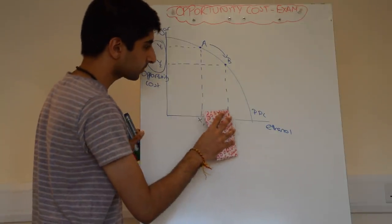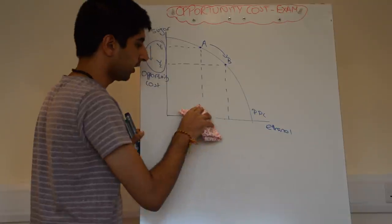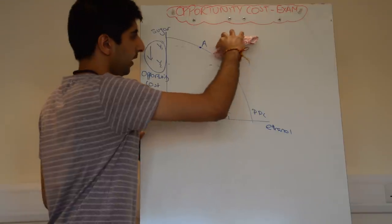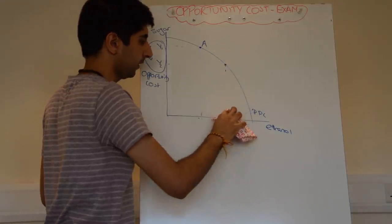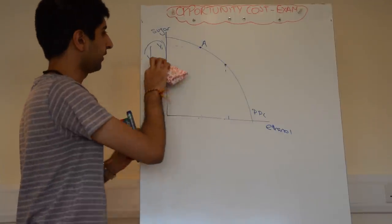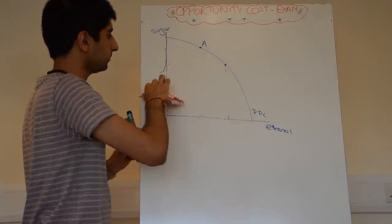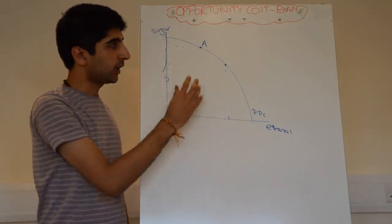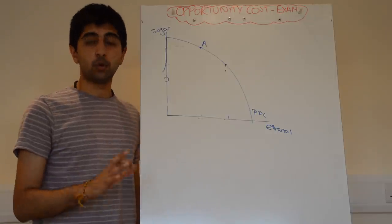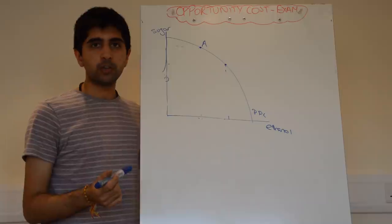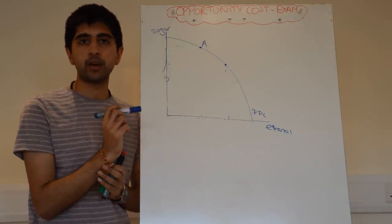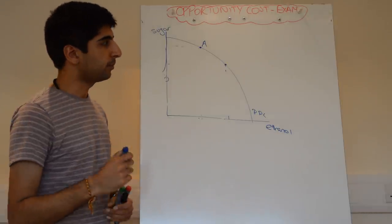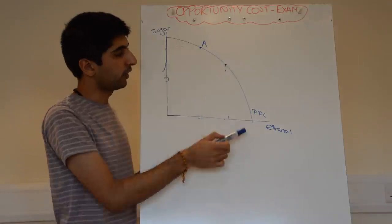Let's also show another type of exam question using PPCs. Another type of question you can be asked regarding PPCs is to show efficiencies or inefficiencies. A common exam question would be: pick a point on the PPC which is productively efficient — or maybe allocatively efficient. And you would pick a point on the curve.